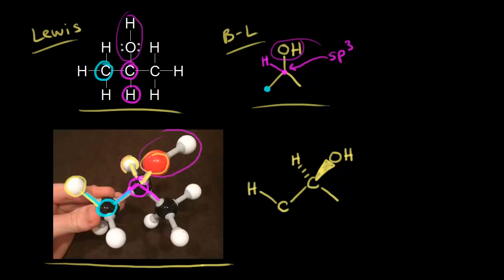What about the other two hydrogens? This hydrogen is coming out at us in space, so we represent that with a wedge — the bond is in front of the paper, coming towards us in space. And then there's another hydrogen bonded to the carbon in blue that is going away from us in space. The carbon in blue is also sp3 hybridized, so we would expect tetrahedral geometry around that carbon.